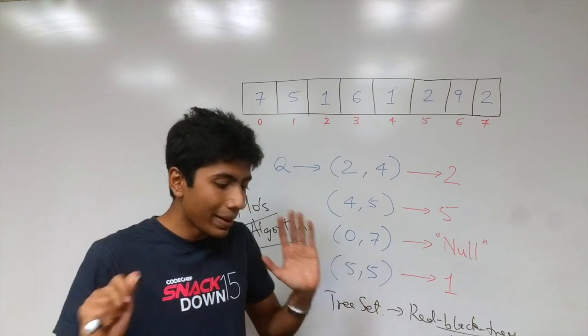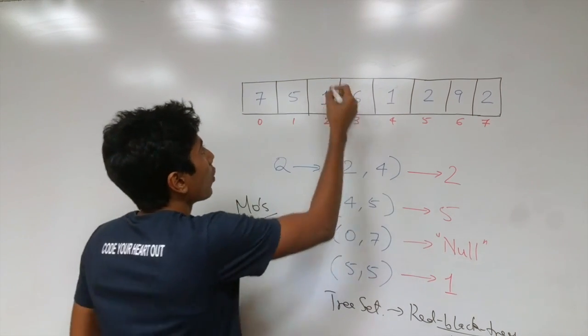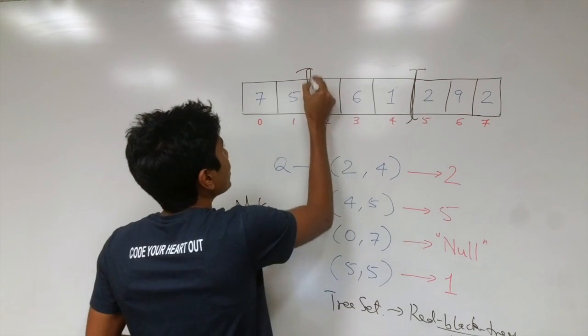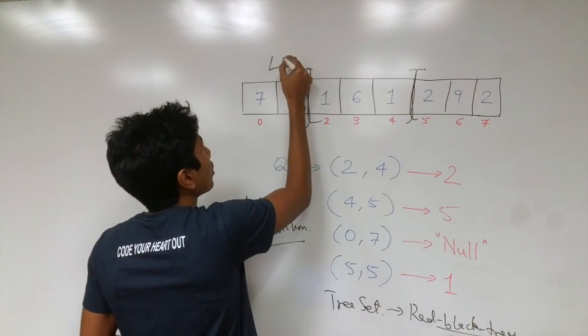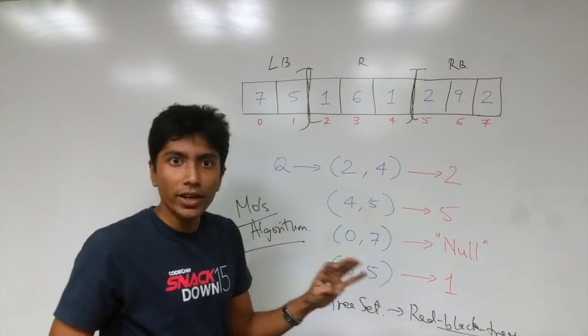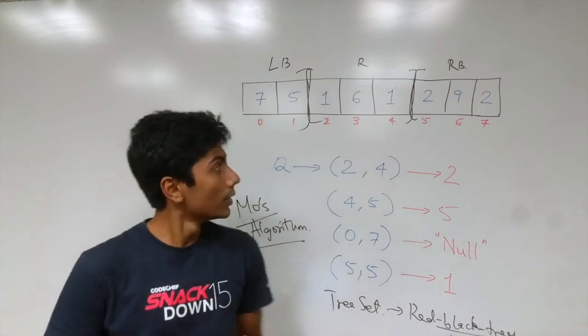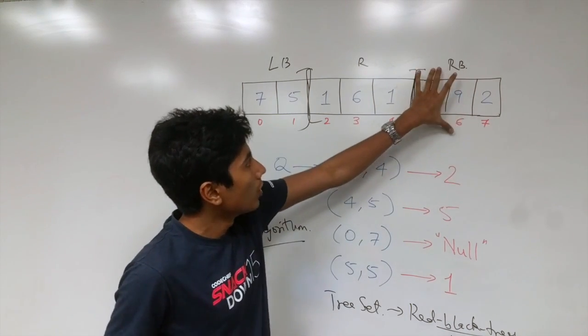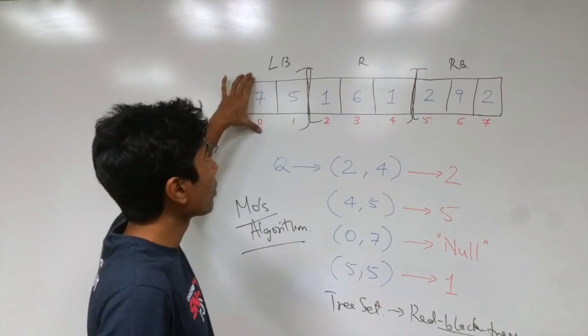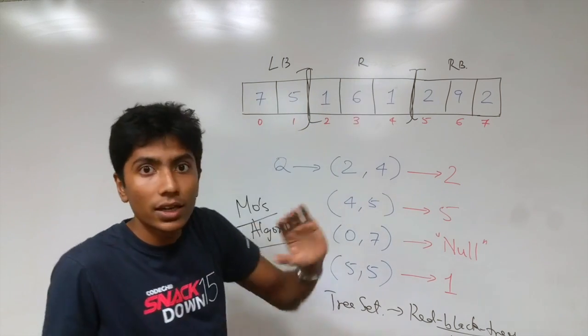We have this data structure which is going to be maintaining sets. What kind of sets? Everything which is within the given range and outside the given range. So that will be three sets which is the left block, the range itself, and the right block. Till this point everything is clear. Now what do we do?